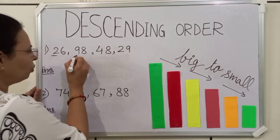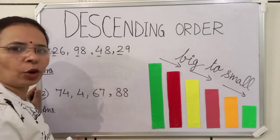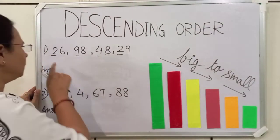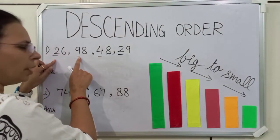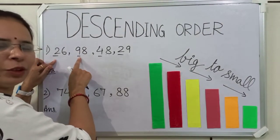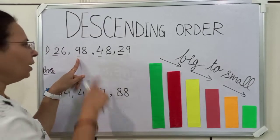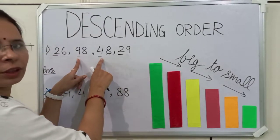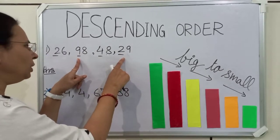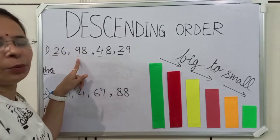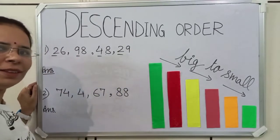2, 9, 4 and 2 are the tens place numbers. We will start comparing from the first number. First number is 2. Is 2 greater than 9? No. So, we will skip 2. We will take 9. Is 9 greater than 4? Yes. Is 9 greater than 2? Yes. It means 98 is the biggest number among these numbers. So, first we will write 98.